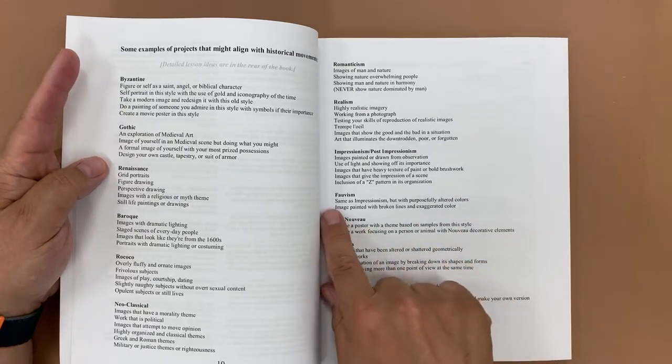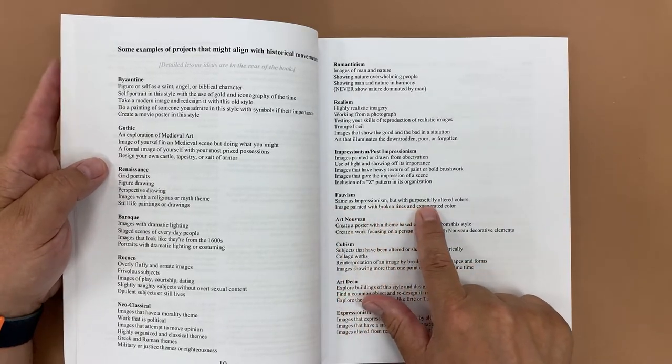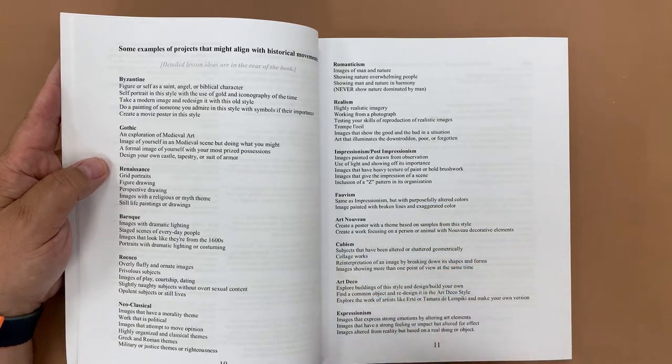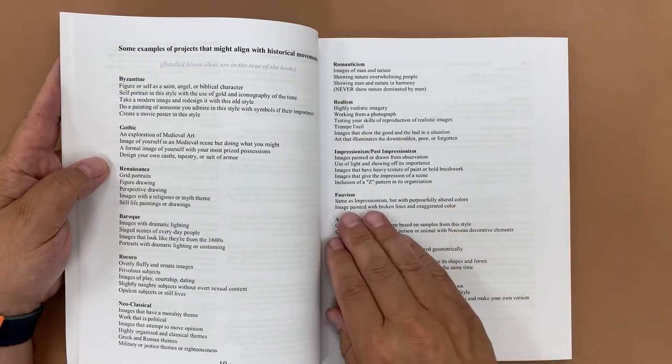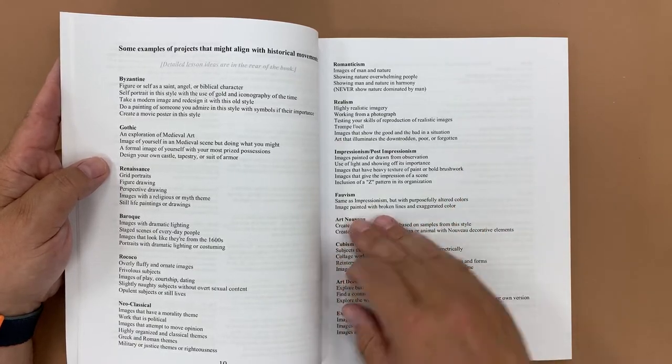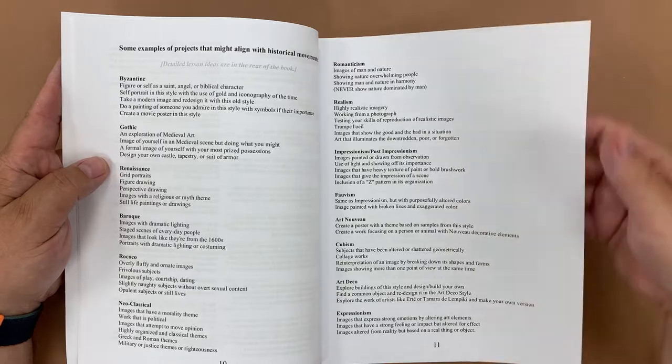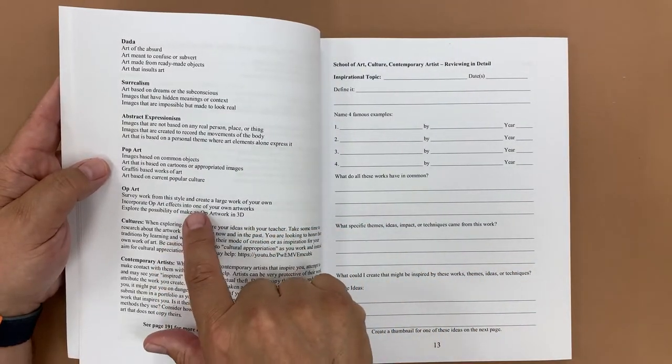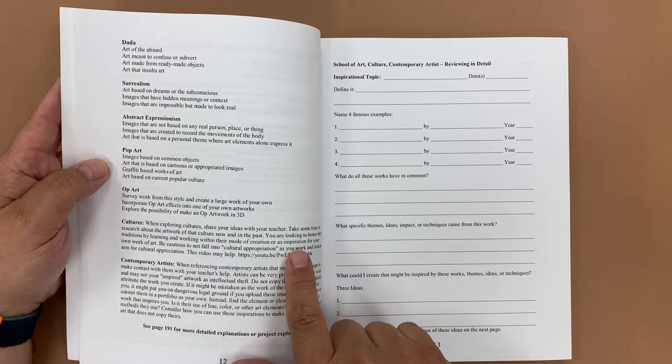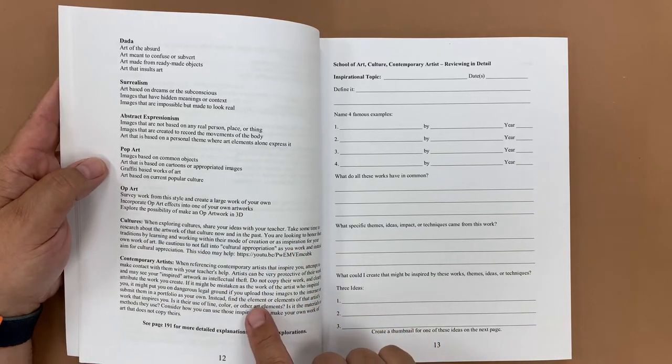And then I have some brief ideas, thumbnails of potential projects for each of the schools of art and historical periods. So for Fauvism, same as Impressionism but with purposefully altered colors. So students could do an outdoor scene in the style of Impressionism but then use the wrong colors to kind of achieve an idea of what Fauvism might look like, and so forth all the way through op art, has a statement about cultures and then about contemporary artists.